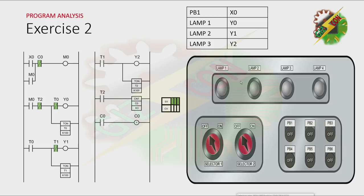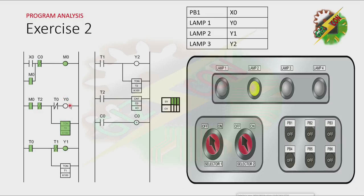Ok, let's continue. Let's have our program analysis. Let's press PB1. As you can see here, there's a latching for M0. And because of that, Y0 will turn on, and T0 will be activated after 1 second. And because T0 is activated, the normally closed contact of T0 will be open, causing Y0 to turn off. And because the normally open contact of T0 is activated, Y1 will be activated, and timer T1 will be activated after 1 second. Because T1 is activated, the normally closed contact of T1 will be open, causing Y1 to turn off.